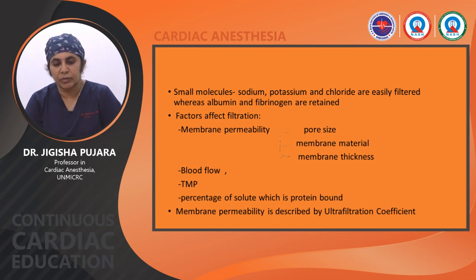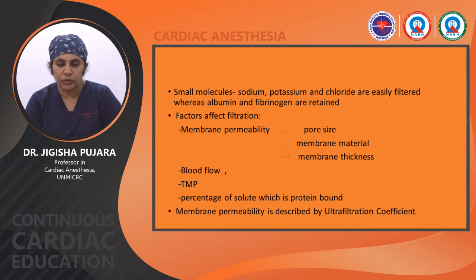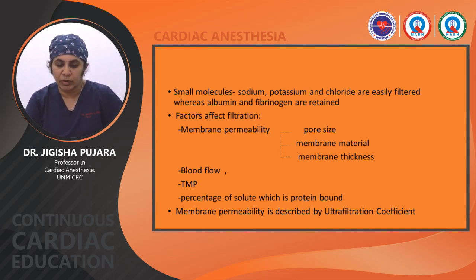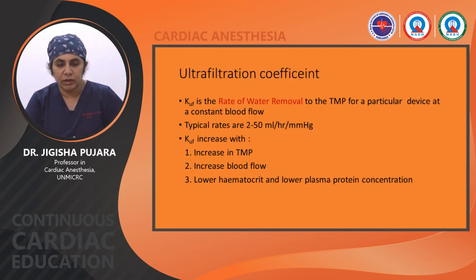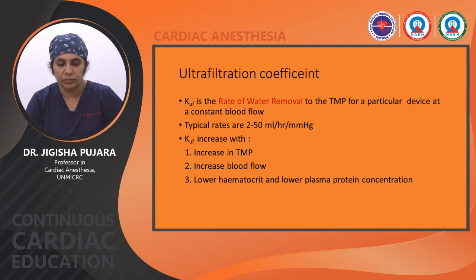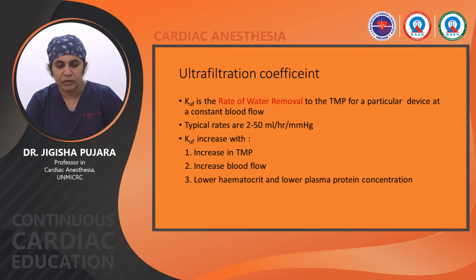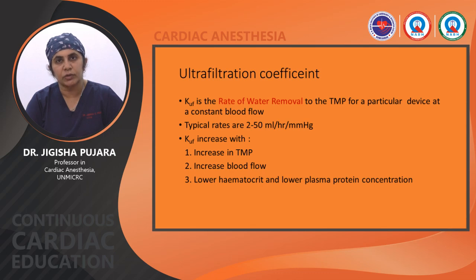Factors affecting filtration or membrane permeability include pore size, membrane material, and membrane thickness. It is also affected by blood flow, transmembrane pressure gradient, and percentage of the solute that is protein bound. Membrane permeability is described by the ultrafiltration coefficient — the rate of water removal relative to TMP for a particular device at constant blood flow. Typical rates are 2 to 50 mL per hour per mmHg. The ultrafiltration coefficient increases with increased TMP, increased blood flow, and lower hematocrit and lower plasma protein concentration.